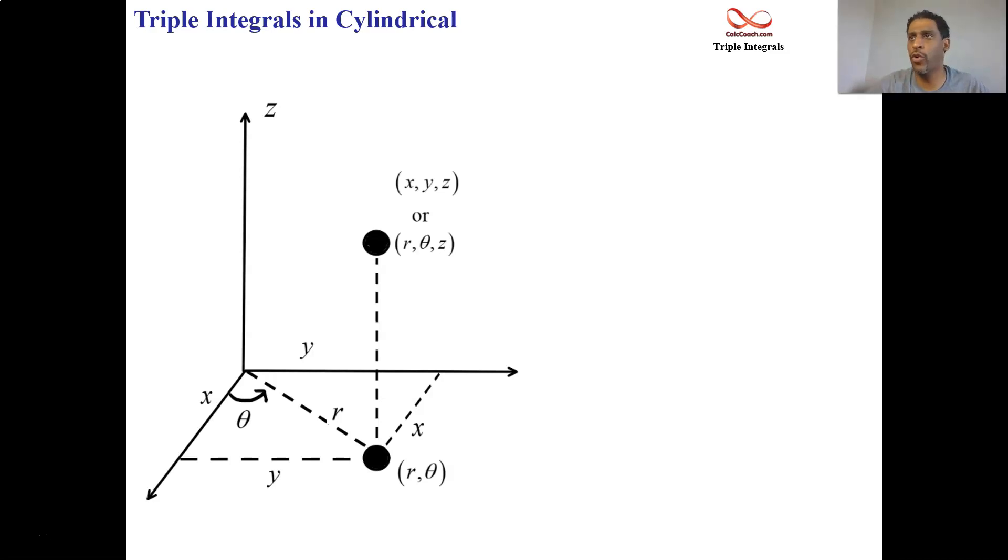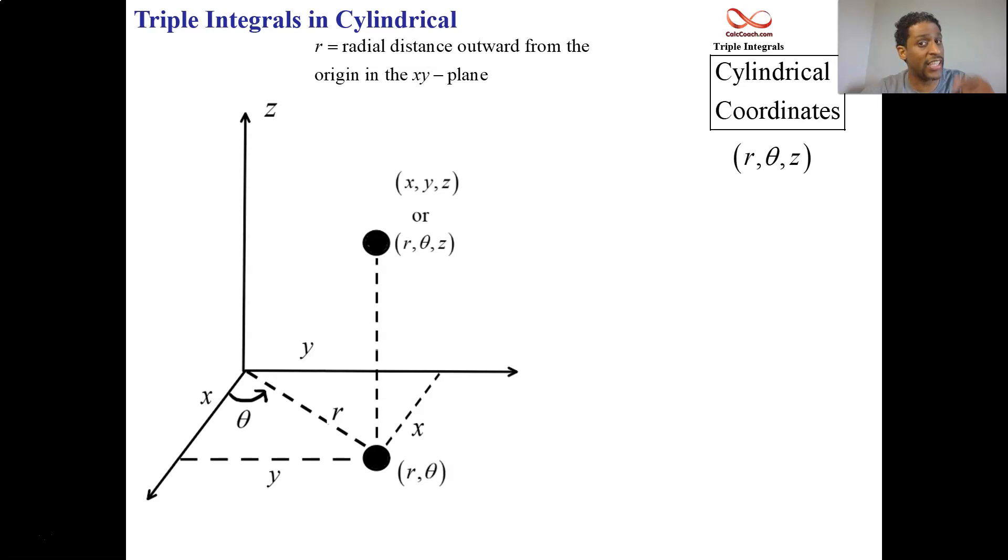It's called cylindrical coordinates, and the points are labeled r, theta, z. The r stands for the radial distance outward from the origin in the x, y plane. So that's the dashed line there in the x, y plane.